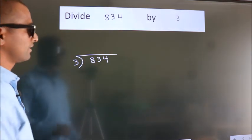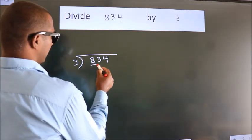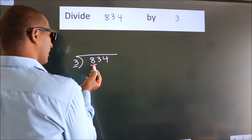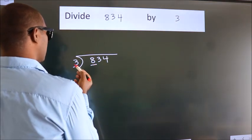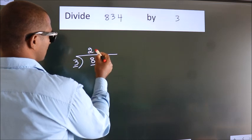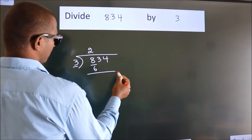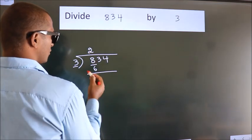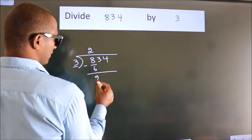Next. Here we have 8, here 3. A number close to 8 in 3 table is 3 2s, 6. Now we should subtract. We get 2.